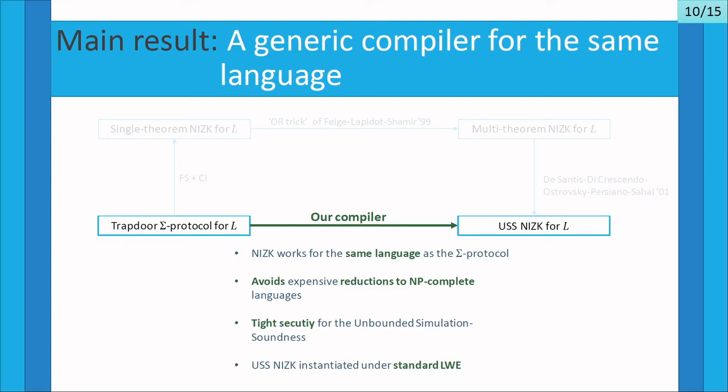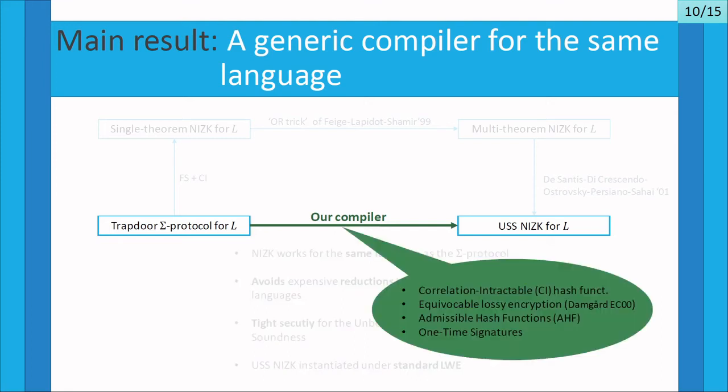We also obtain tight security for the unbounded simulation soundness proof, and our compiler can be instantiated using the standard learning with errors assumption. From a technical point of view, our compiler requires the use of correlation-intractable hash functions, equivocable lossy encryption — a technique that Damgård used in Eurocrypt 2000 — as well as admissible hash functions and one-time signatures.